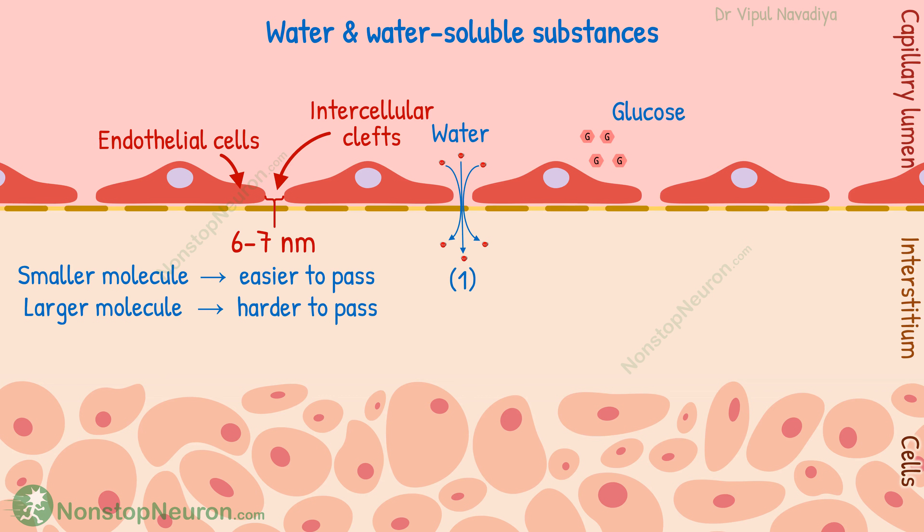Thus, the permeability decreases with increasing molecular size. For example, water molecules being too small can cross readily, so its permeability is 1. Glucose molecules are larger, so its permeability is less than water. Plasma proteins are very large in size, so they have limited permeability. The permeability of albumin is only 0.001, so the concentration of plasma proteins in the interstitium is very low. In a nutshell, diffusion depends on the size of the molecules.